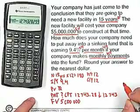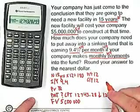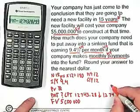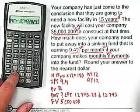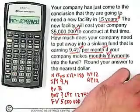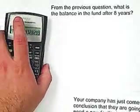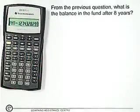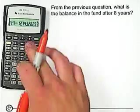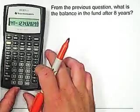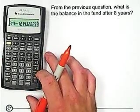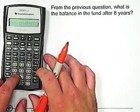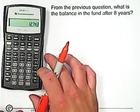For the second question on the next page: let's retype this answer without the extra decimals, because the question says round your answer to the nearest dollar. The next page asks: from the previous question, what is the balance in the fund after 8 years? Let's take this answer and retype it into our calculator. Remember, the question said round the payments to the nearest dollar, so the payments are actually going to be $12,743.